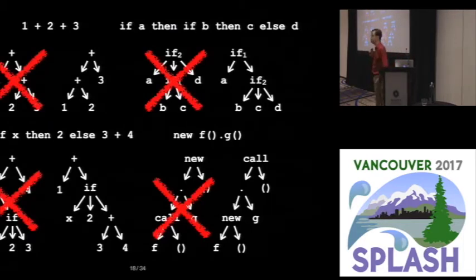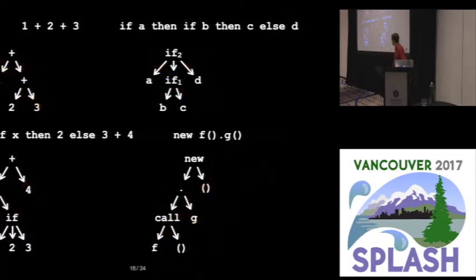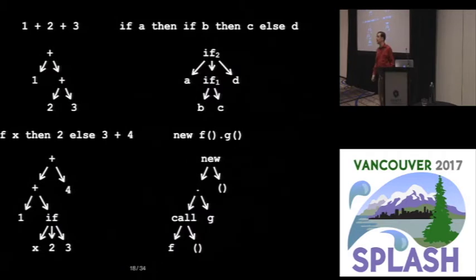And in each case, we want to reject one of those two trees. Now, if we look at that tree we want to reject, notice that each of them actually fall into a pattern.